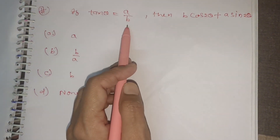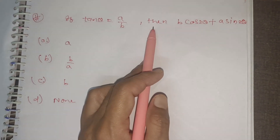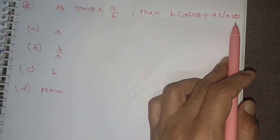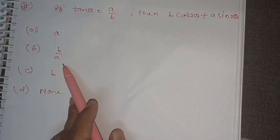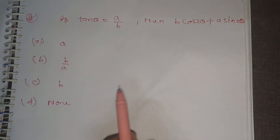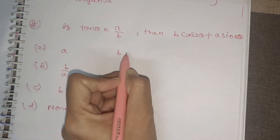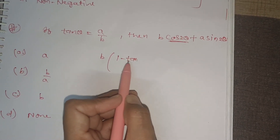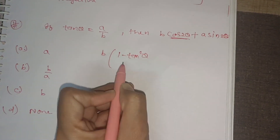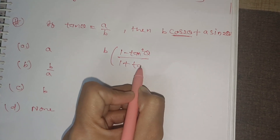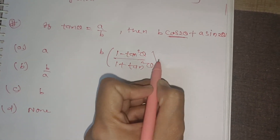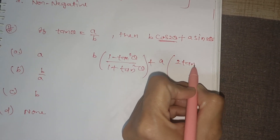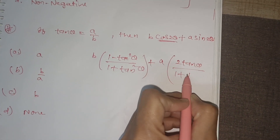If tan θ equals a by b, then b·cos2θ + a·sin2θ can be equal to — options are: a, b, none of these. We use the formula: cos2θ = (1 - tan²θ)/(1 + tan²θ) and sin2θ = 2tanθ/(1 + tan²θ).